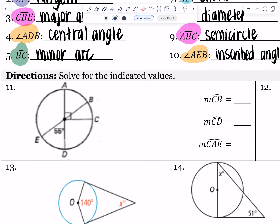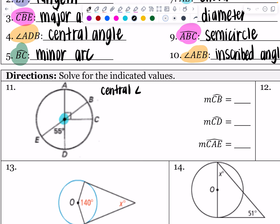Solve for the indicated value. The first thing I want you to notice is that every single one of these points is coming out of the center, so these are going to be central angles. These are central angles, and the central angle is always going to be equal to the arc measure. So even though 55 degrees is written on this angle, 55 degrees would also be the arc measure from E to D — those are congruent in a central angle.